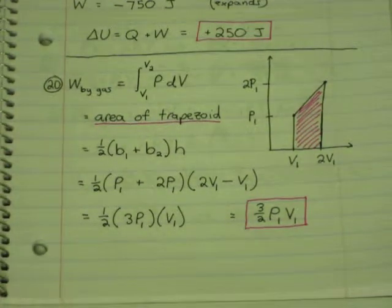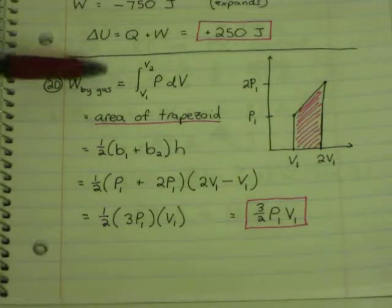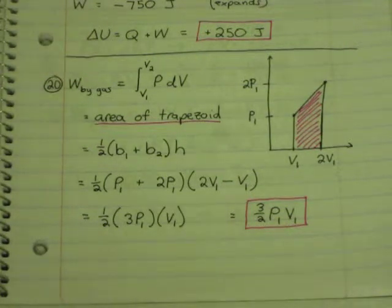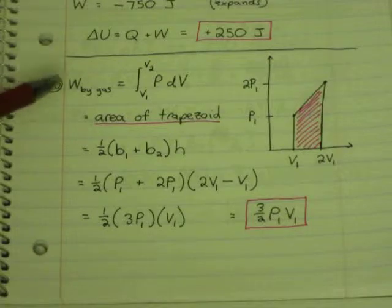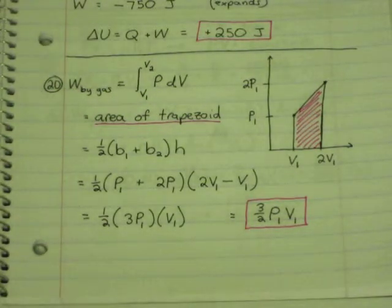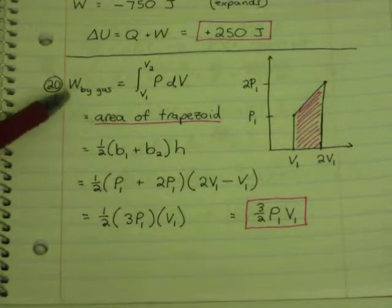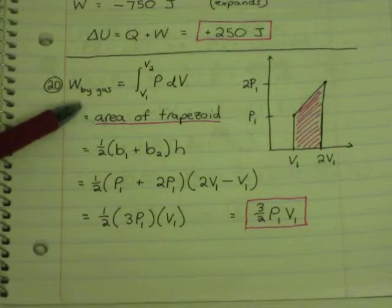For number 20, the work done by the gas is the integral from V1 to V2 of PdV. If you look in the book and you see an equation for W equals the negative of that, remember W is always the work done to the gas, and that would be the negative of the integral. Work done by the gas is the positive integral.